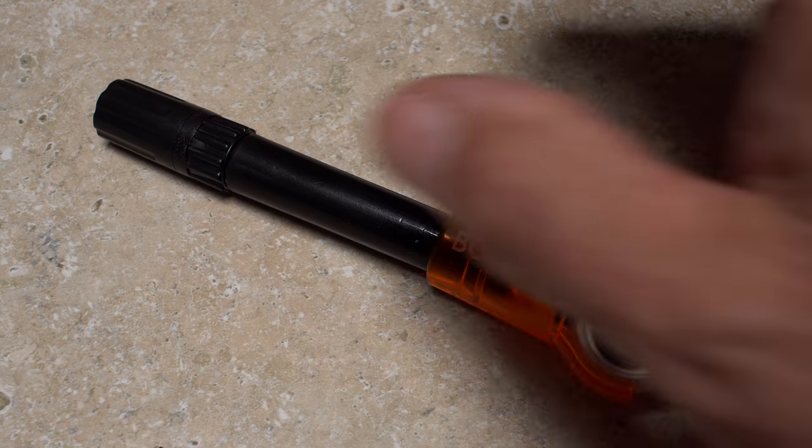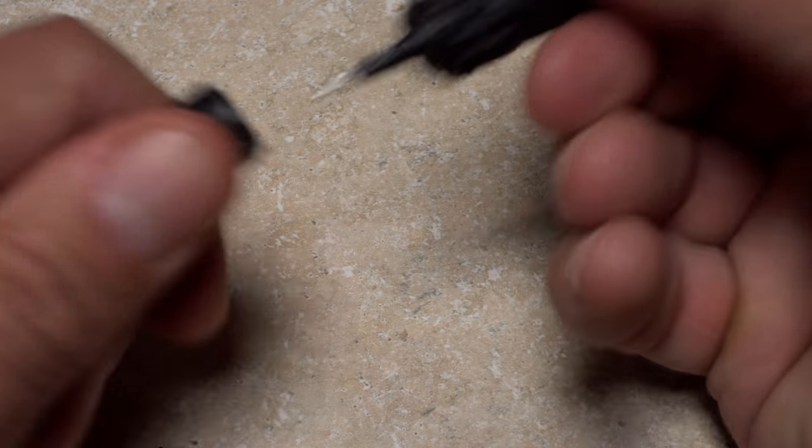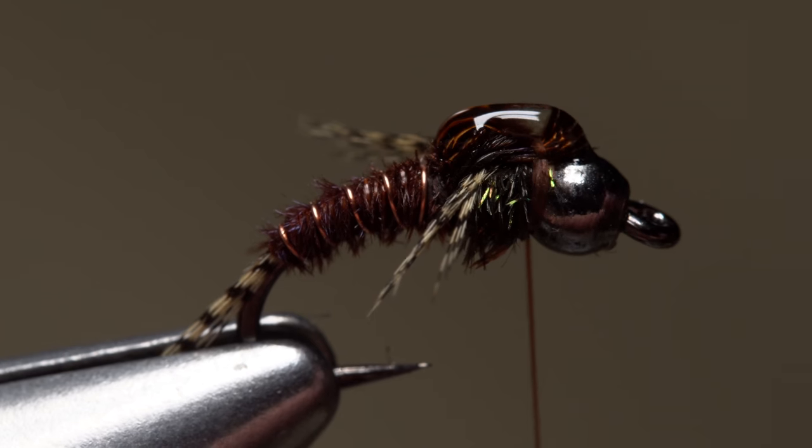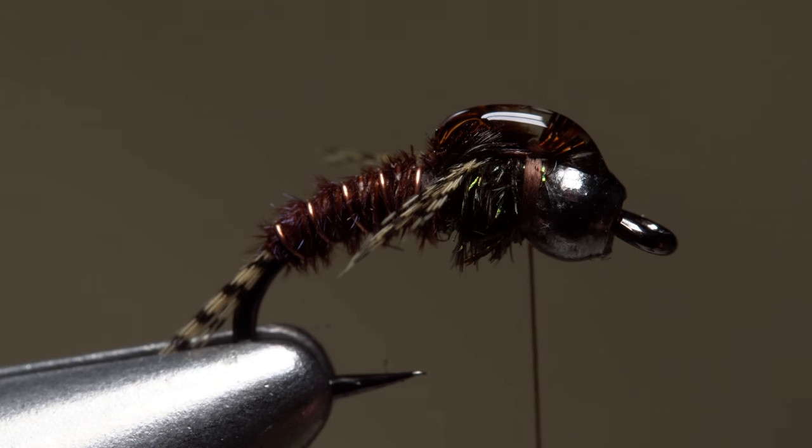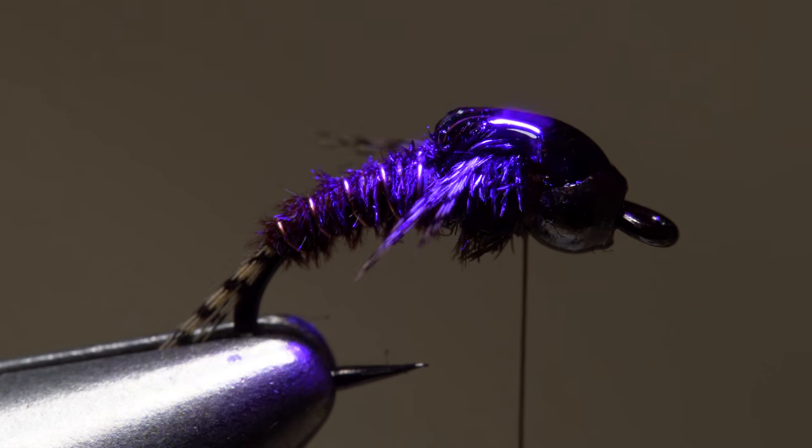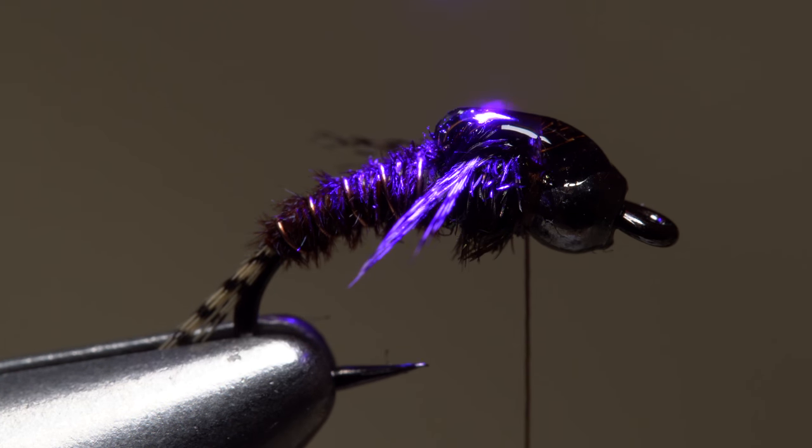Rather than whip finish here, I'll just reach for the UV cure resin to reinforce and build up the wing case. I really like the way this stuff magnifies the fibers below. Turn on the UV torch and use it to cure the resin. It usually only takes a few seconds to completely harden.